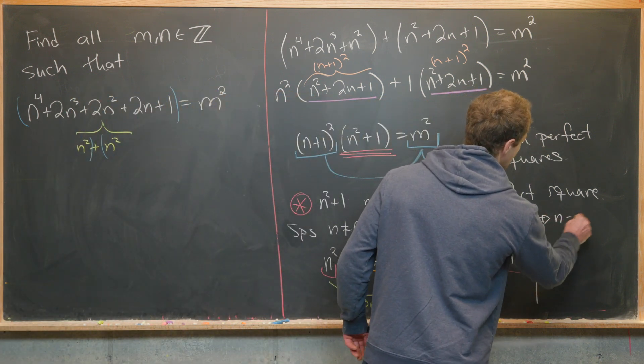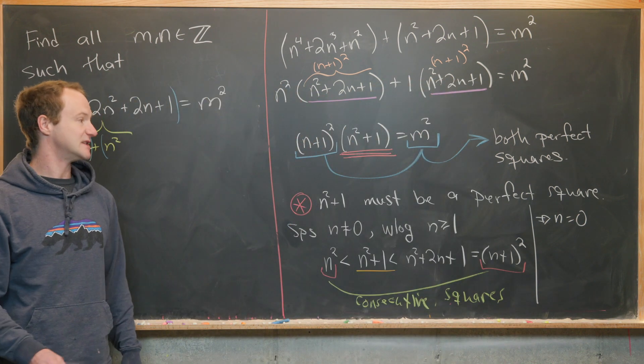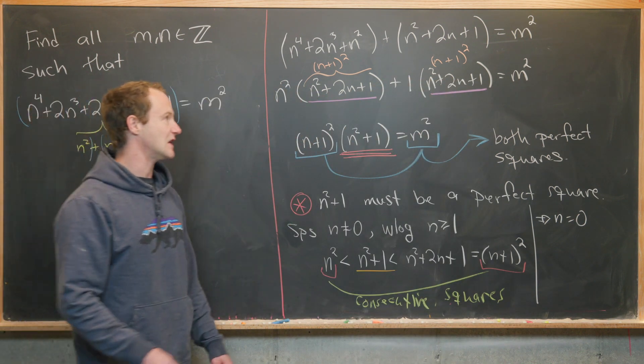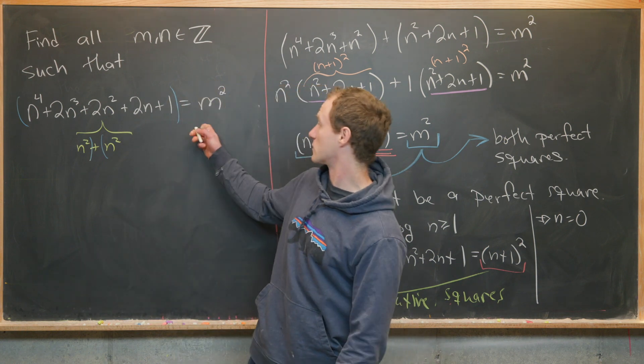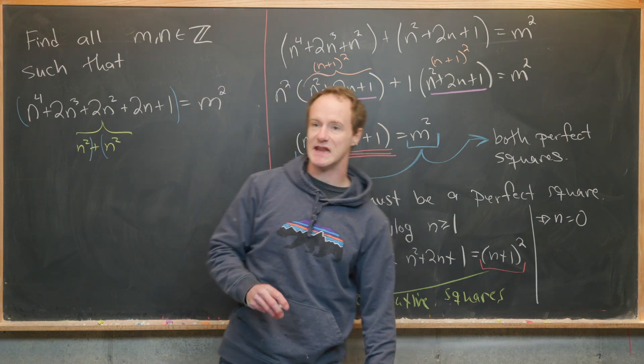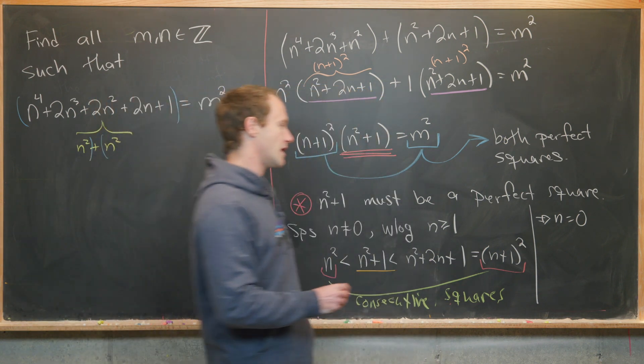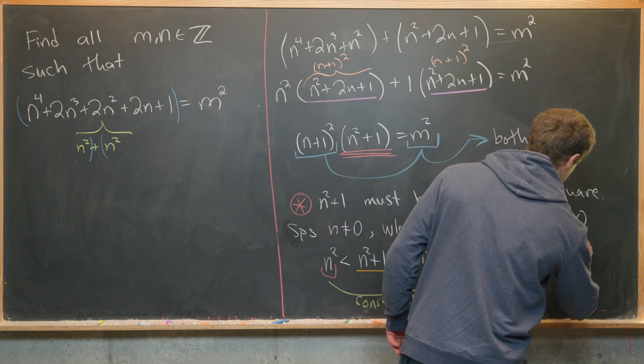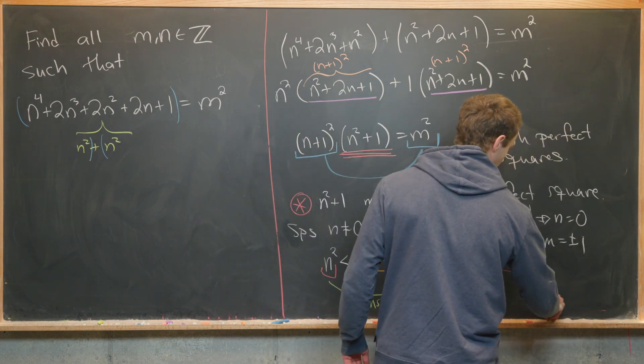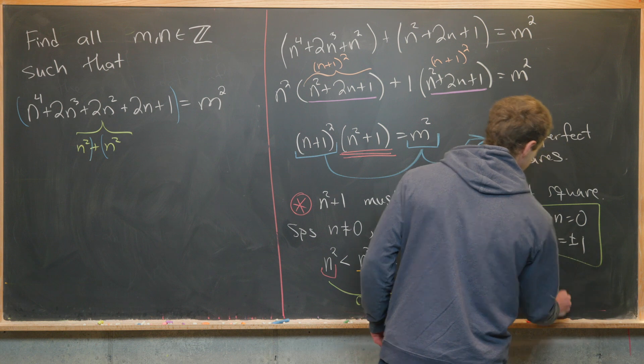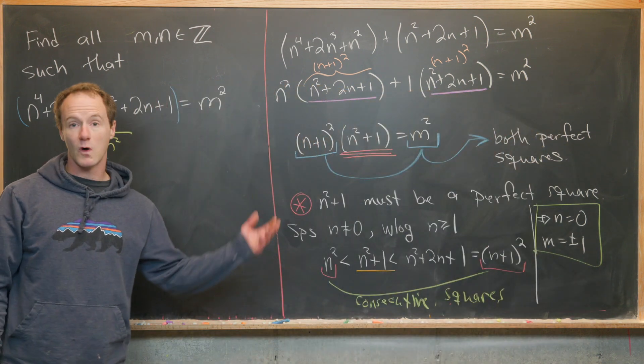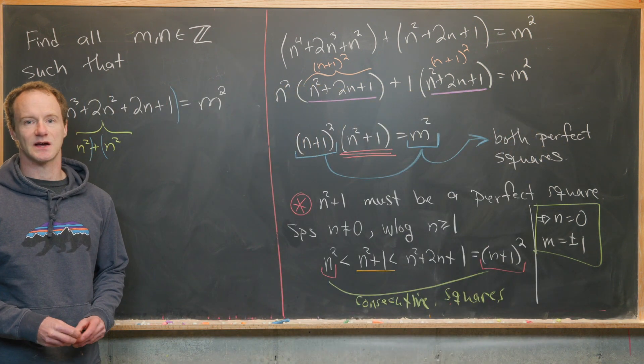So in the end, we've shown that n must equal 0. But now if n equals 0, going back to our original equation, we see that m squared equals 1, which means m equals plus or minus 1. So those are our two solutions: (0, 1) and (0, -1). And that's a good place to stop.